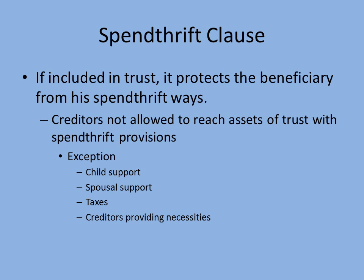Spendthrift clauses get inserted into trusts — not always, but they do show up. The point is to protect beneficiaries who aren't good with money by limiting what creditors can reach from trust assets. The only creditors who can normally reach those assets are: children owed child support by the beneficiary, former spouses owed spousal support, tax authorities owed taxes by the beneficiary, and creditors owed money for providing necessities. Those four categories are the ones we know are out there.